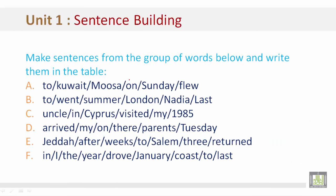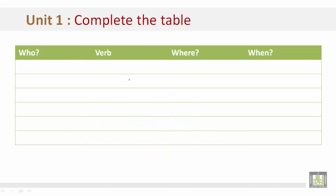Sentence building. Make sentences from the groups of words below and write them in the table — the table will be on the next slide. As you can see, we have a few sentences here and they are all out of order. Let's go to the next slide where we will put these sentences in order. In each example, the sentence will have a who, verb, where, and when. Let's begin with example A: Musa flew to Kuwait on Sunday.